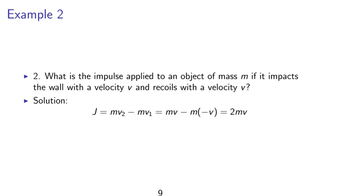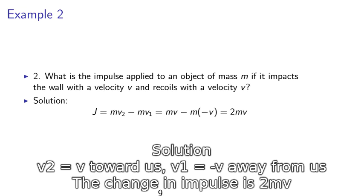We need to consider the initial and final velocity as well as their directions. Solution. The impulse is given by mv2 minus mv1. The final velocity is v if v is defined in the positive direction coming toward us. So we get the impulse as 2mv.